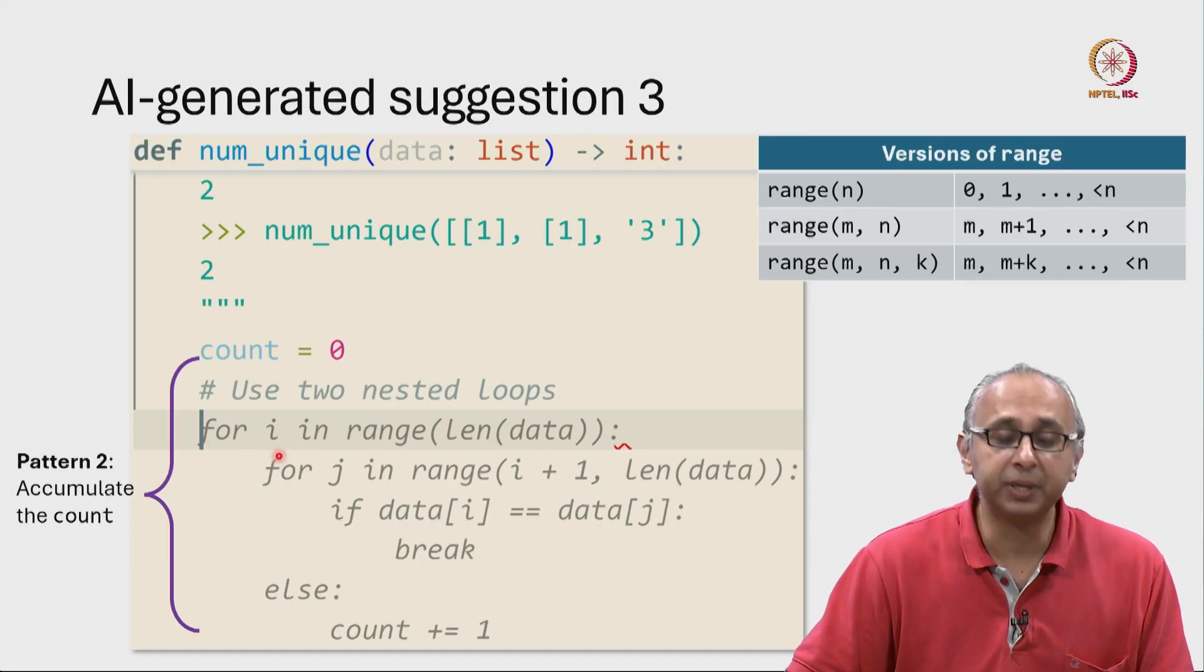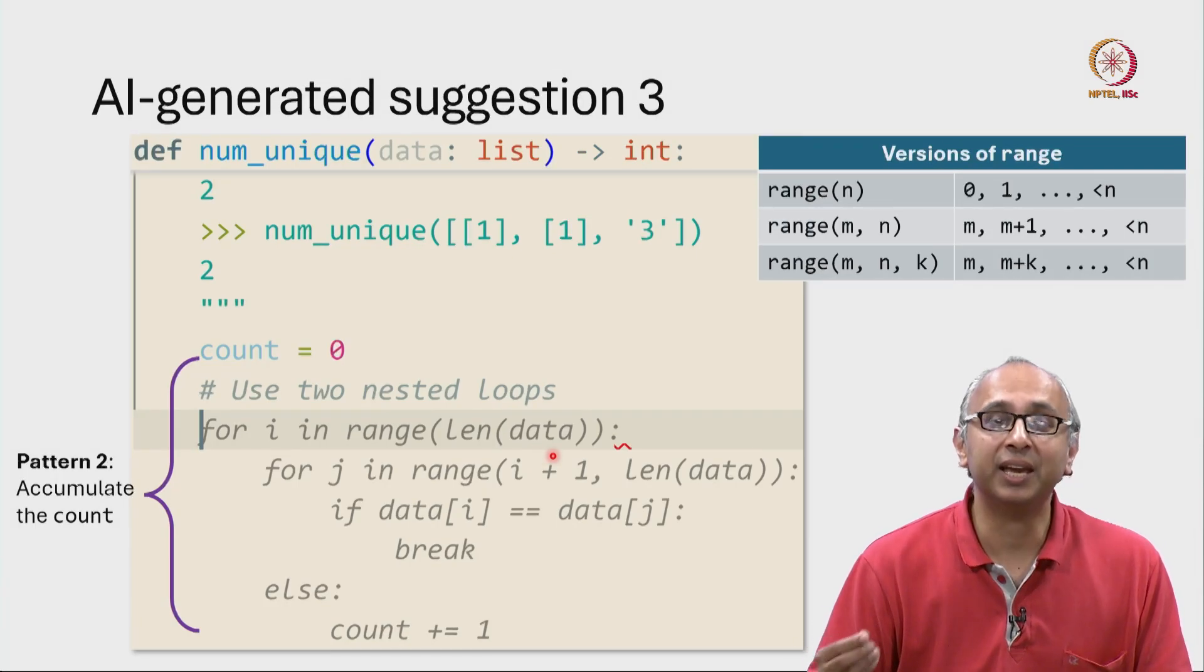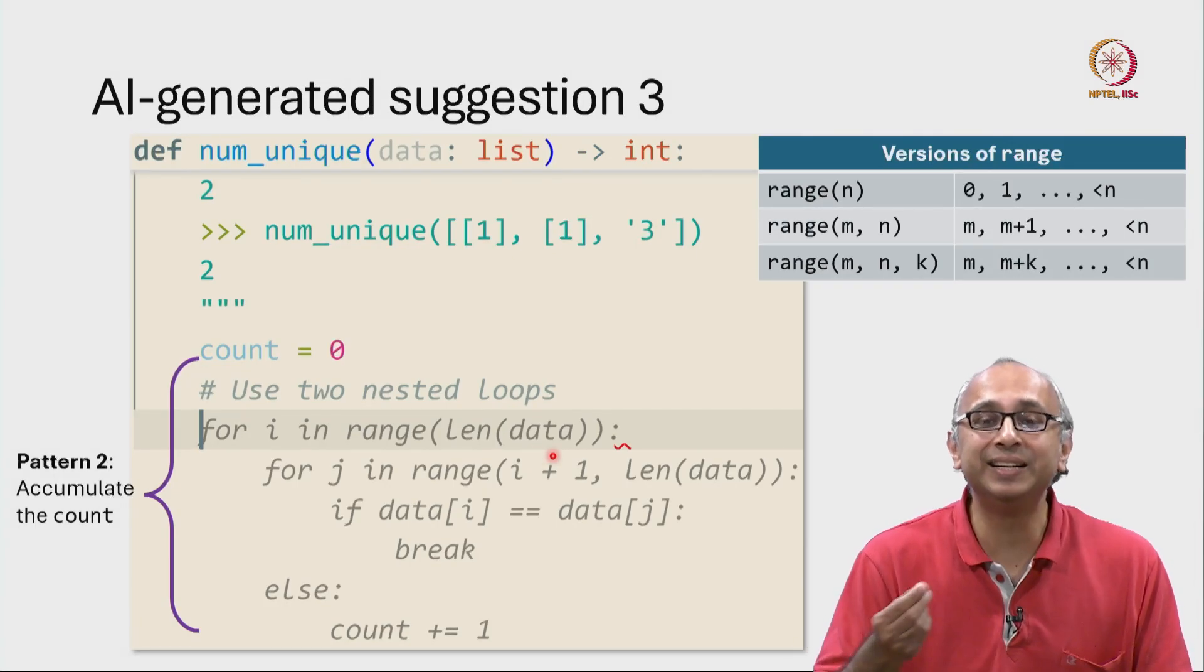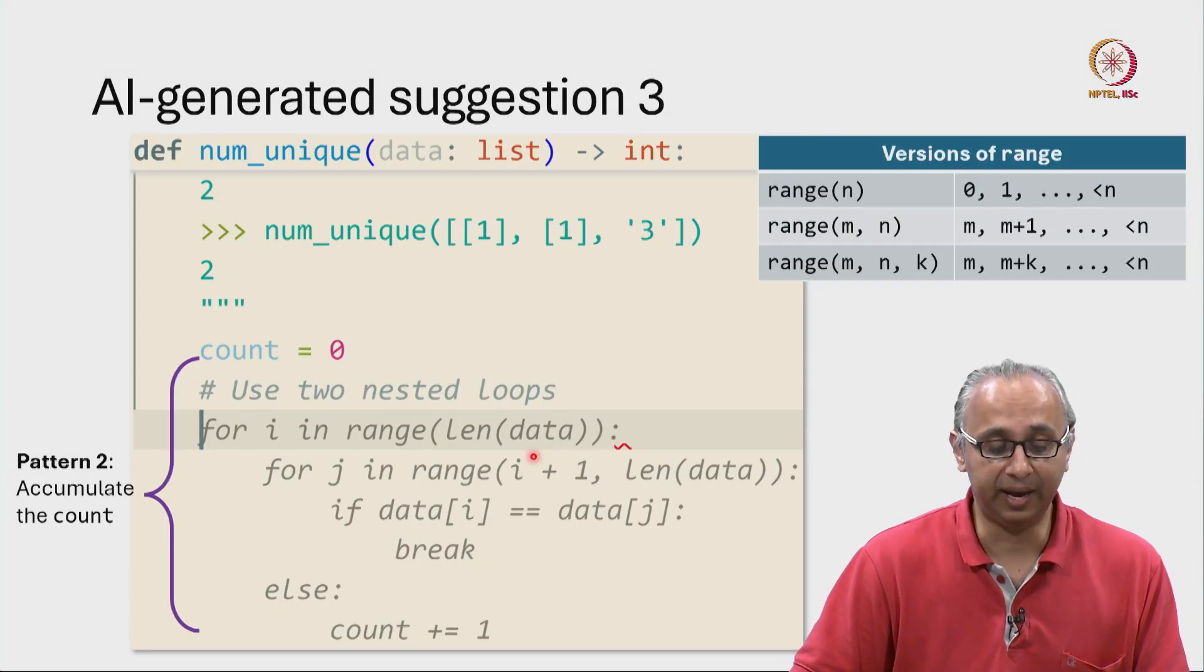The outer for loop is simply examining all values i in the range 0 up to but not including len of data. That is to say, i is all legal indices in this list data. Now given such an index i, we are now in the nested for loop.